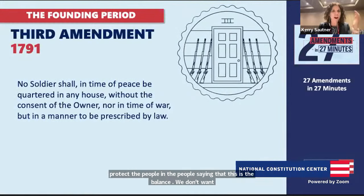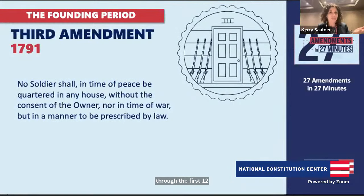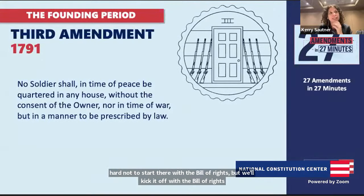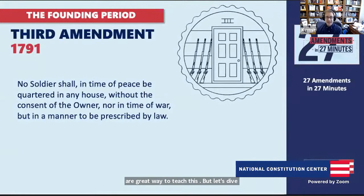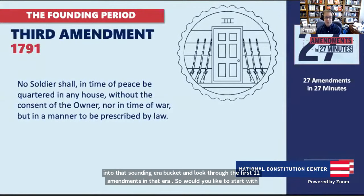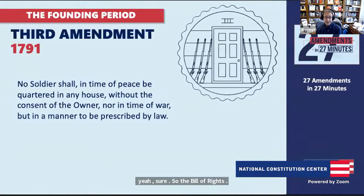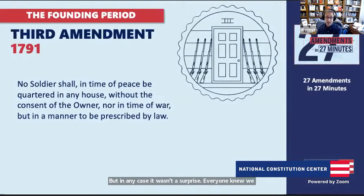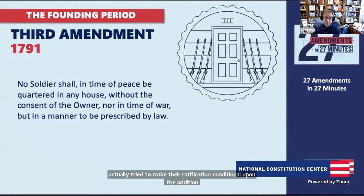The Third Amendment gets talked about mostly as a joke — a quirky choice for a favorite amendment — because it's been very successful in the sense that it's not really invoked much. It's about a practice the British engaged in that colonists disliked. You can trace a lot of the Bill of Rights provisions back to complaints in the Declaration of Independence. One of them is: 'He has been keeping bodies of troops among us and quartering them in our houses,' which was a way of oppressing people.